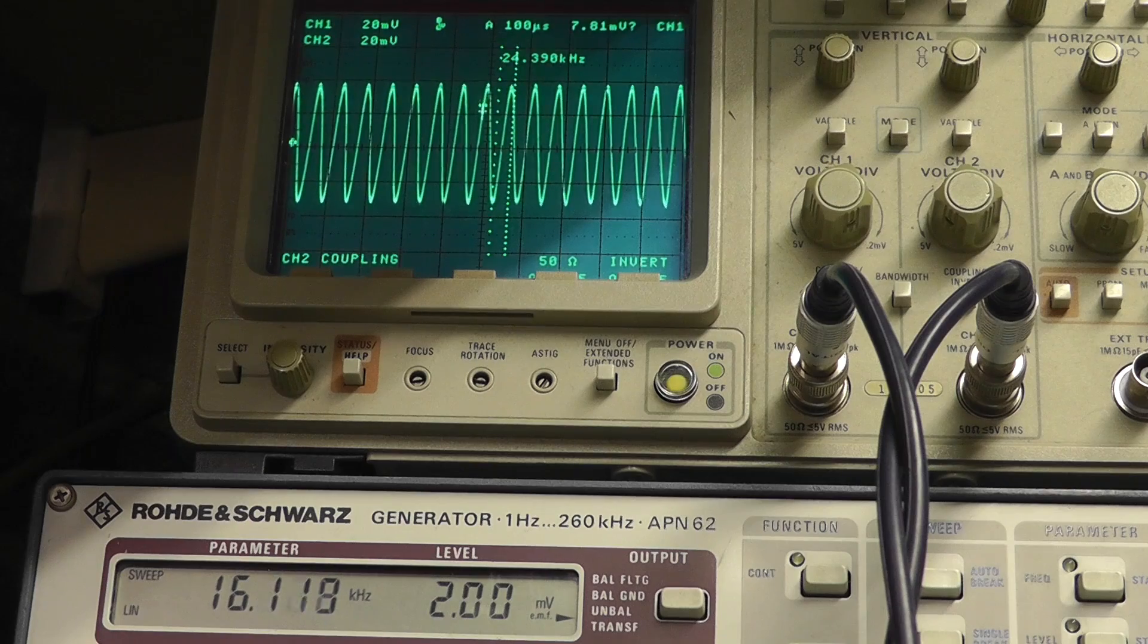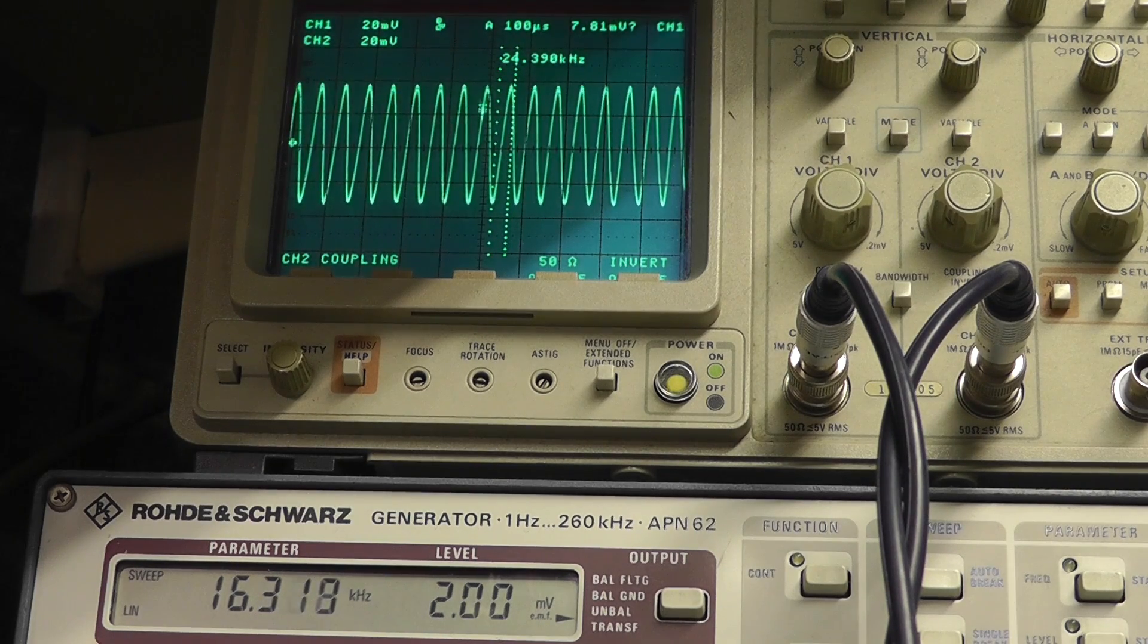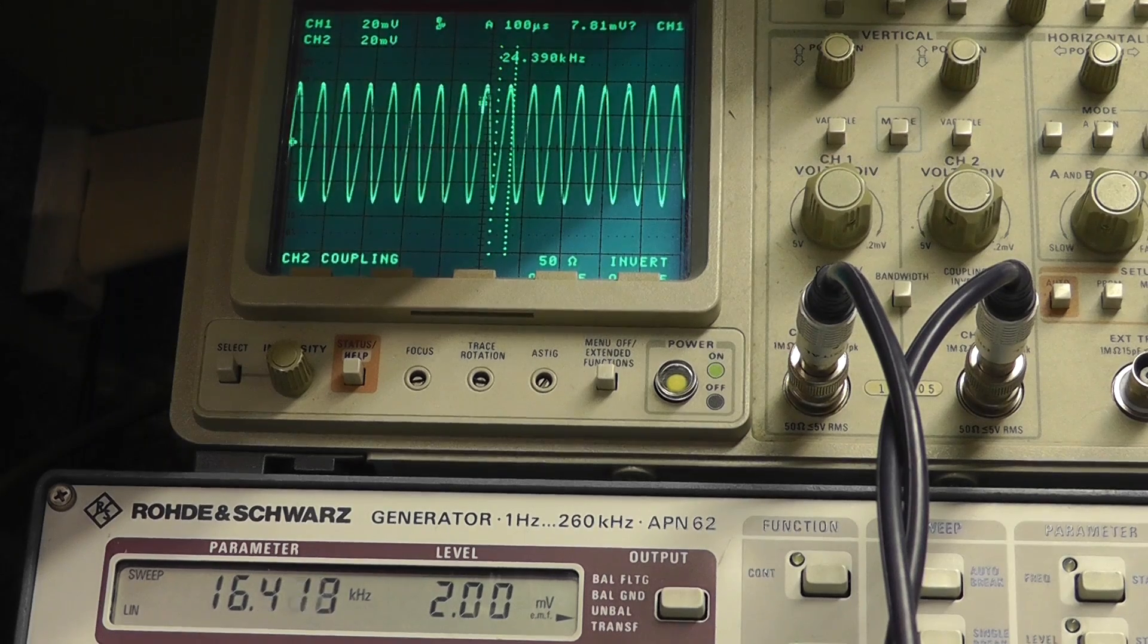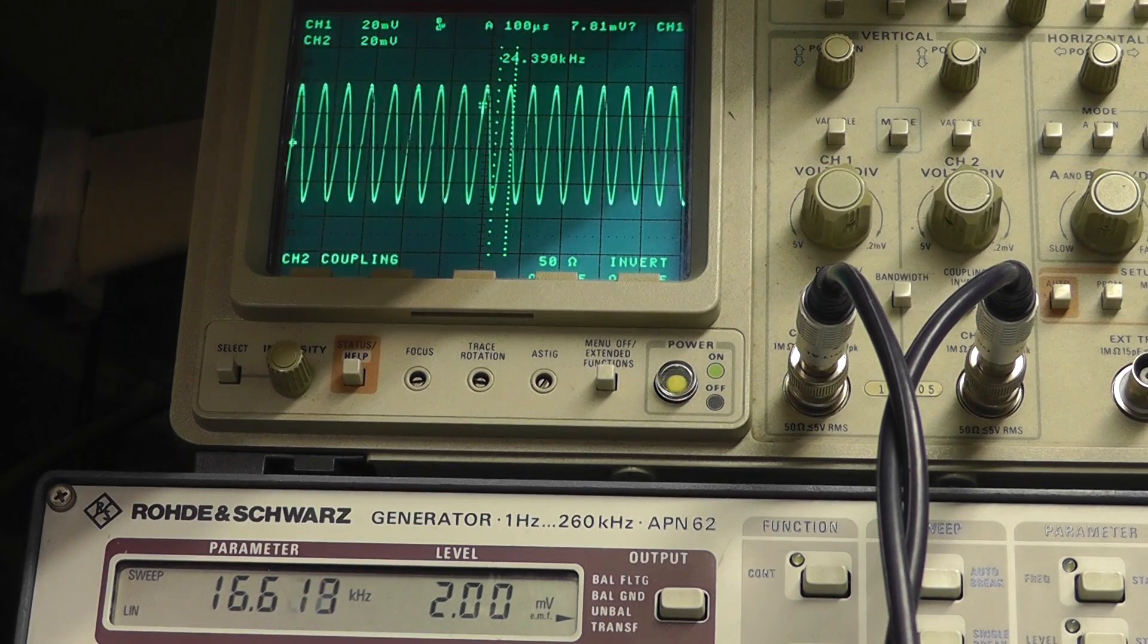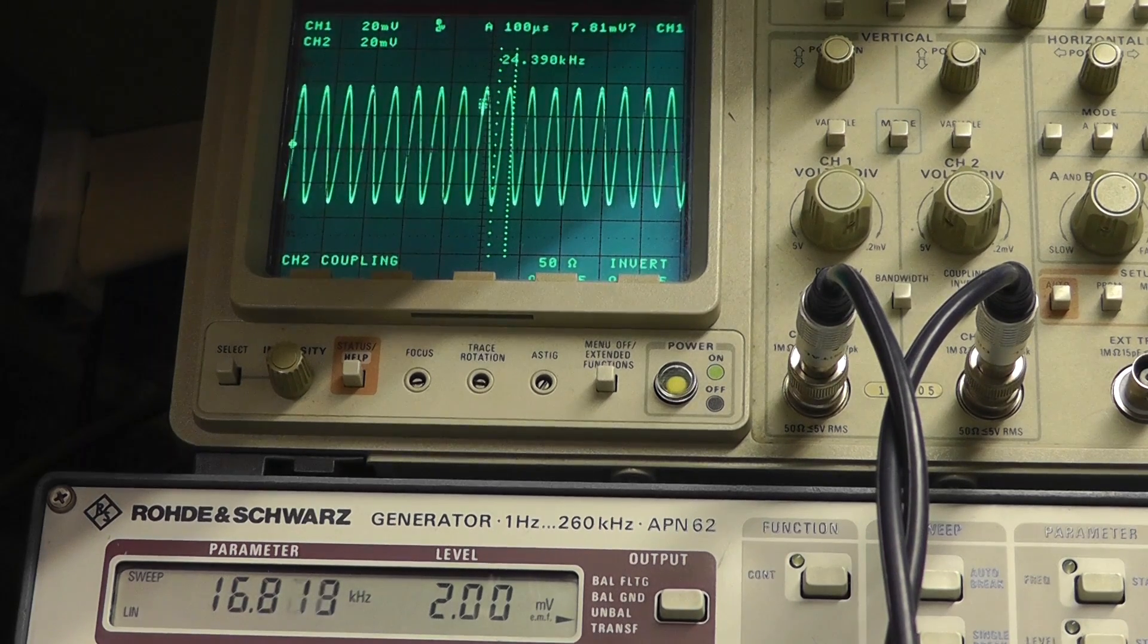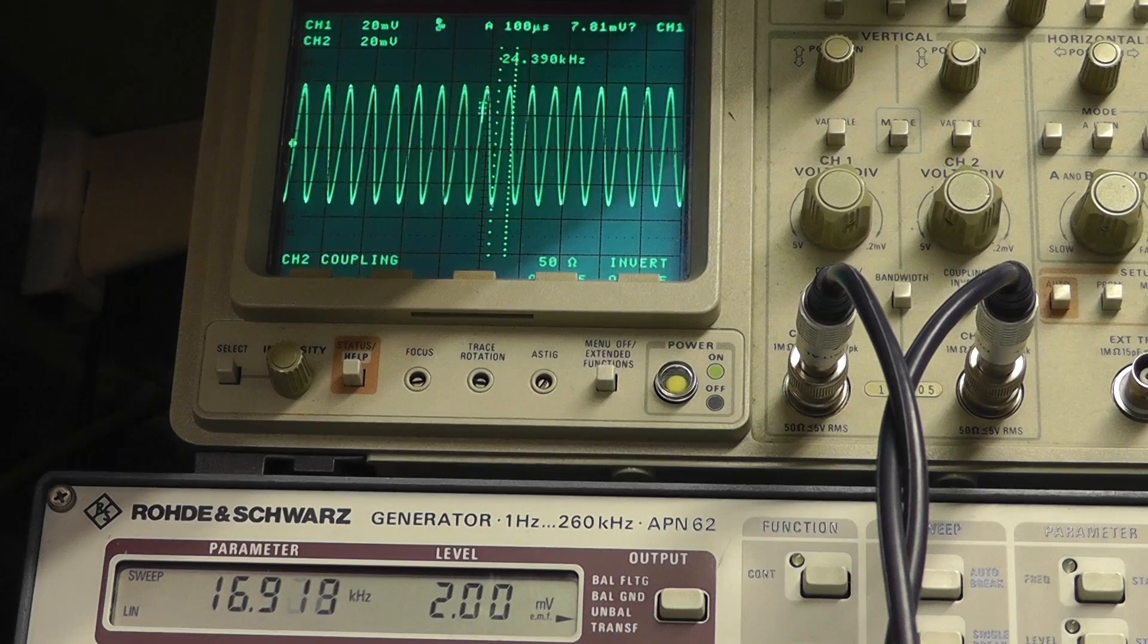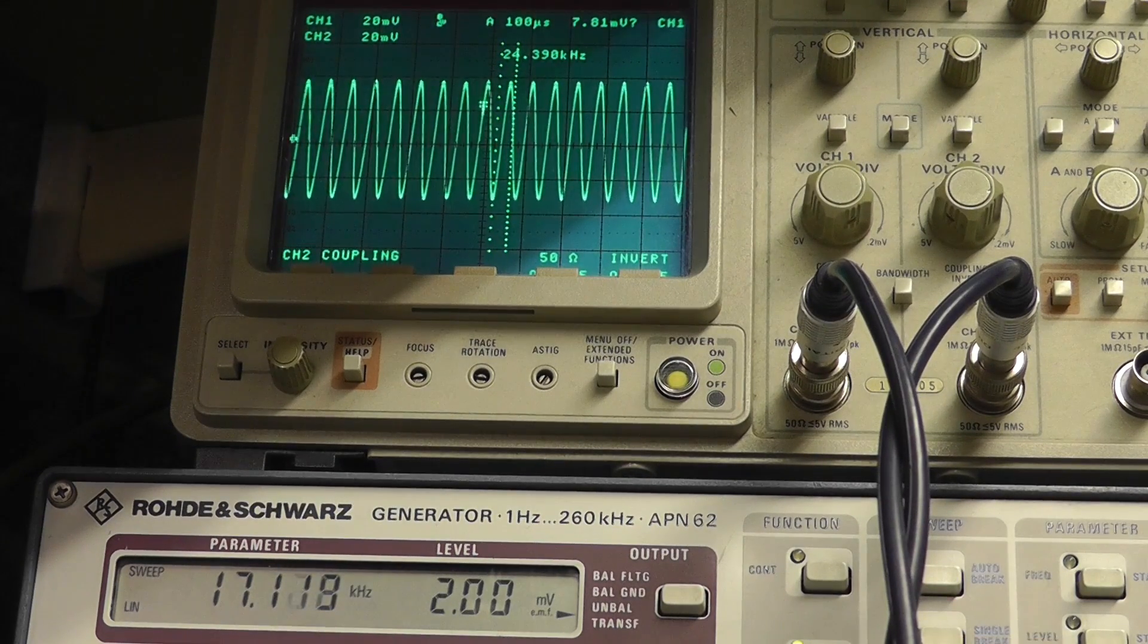Actually my girlfriend's hearing because she used to go to lots of rock concerts and things. One ear and we actually did a test with this audio analyzer. One ear is quite badly attenuated at higher frequencies and the other ear is pretty good. So it depends on the individual. So we're at 17 kilohertz. I'm going to stop now.